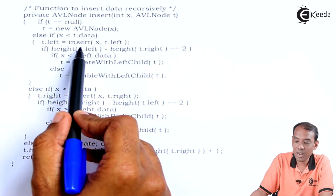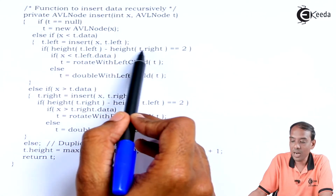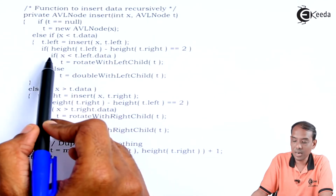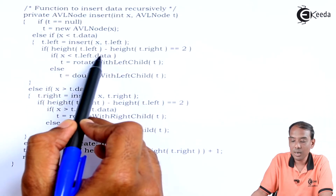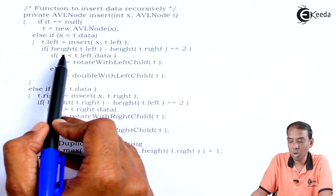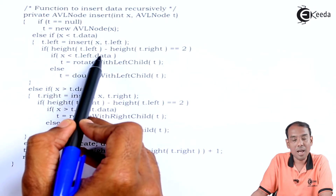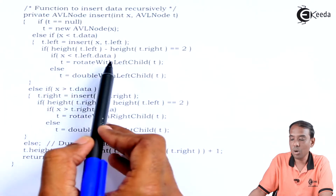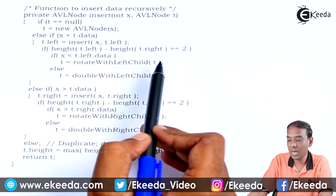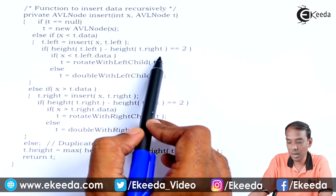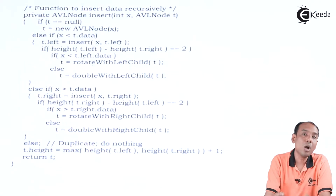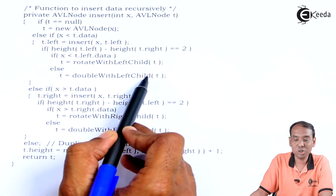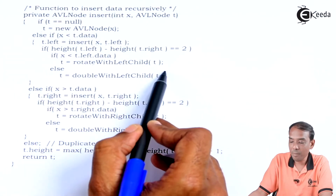If the imbalance is on the left and x is less than t.left.data, we call rotateWithLeftChild(t) — this is the LL rotation case. Otherwise, we call doubleWithLeftChild(t) — this is the LR (left-right) double rotation case. So t is updated accordingly: t = rotateWithLeftChild(t) or t = doubleWithLeftChild(t).